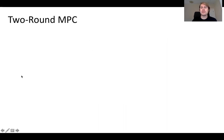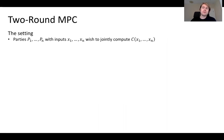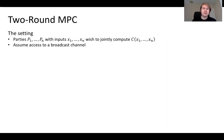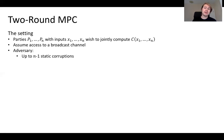Some background on two-round MPC. We're interested in the setting where we have n parties, each with their own private input Xi, and they wish to jointly compute some circuit C over their inputs securely. We're going to assume they have access to a broadcast channel. An adversary attacking the system will have static corruptions, picking which parties it's going to corrupt before the protocol begins.